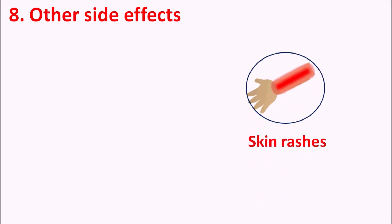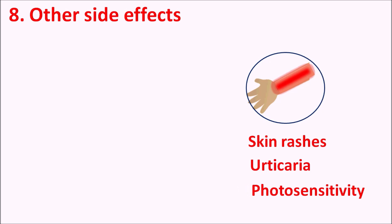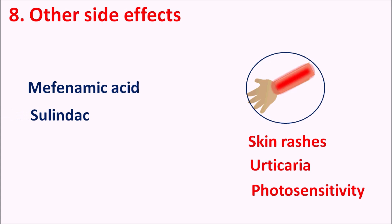Other side effects: a few NSAIDs can also produce skin rashes, urticaria, and even photosensitivity — particularly drugs like mefenamic acid and sulindac, which are acetic acid derivatives, and they can increase skin rashes in patients. So these are the various common side effects produced by NSAIDs. That's all for today. Hope you have enjoyed this video. If you like this video, please subscribe to our channel, share this video with your friends, and post your comments in the comment box. Thank you for watching.